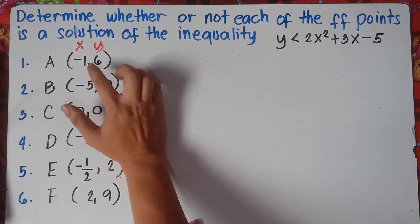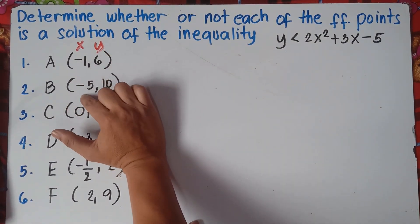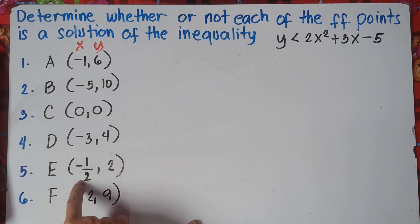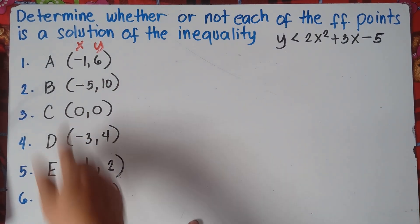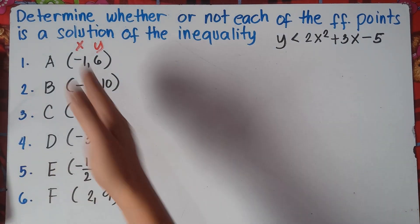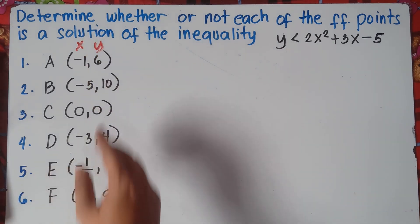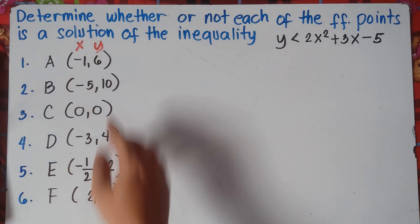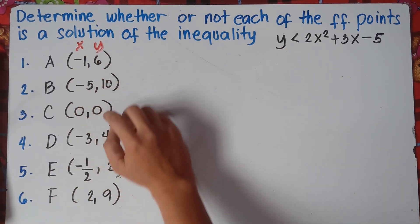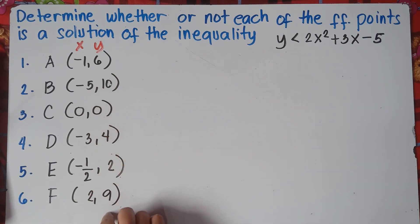This first number will be our x and the second number is our y. Just remember the ordered pair in the Cartesian plane: x and y. So our points are: negative 1, negative 5, 0, negative 3, negative 1 half — those are our x values on the left side. And our y values are 6, 10, 0, 4, 2, and 9.